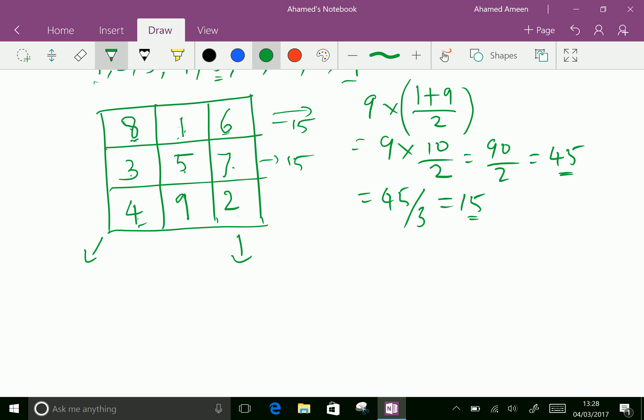4 plus 9 is 13, 13 plus 2 is 15. In columns, 8 plus 3 is 11, 11 plus 4 is 15. 1 plus 5 is 6, 6 plus 9 is 15. 6 plus 7 is 13, 13 plus 2 is 15. Even in diagonals we can add, 6 plus 5 is 11, 11 plus 4 is 15. And 8 plus 5 is 13, 13 plus 2 is 15.